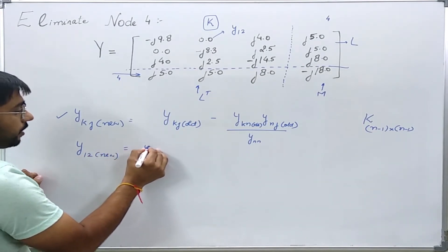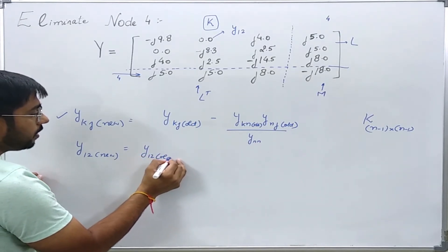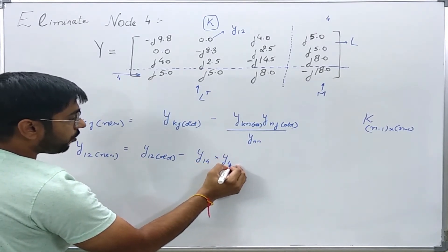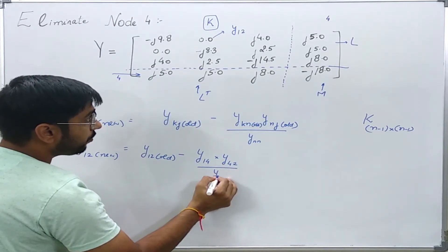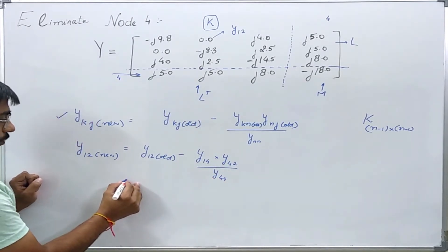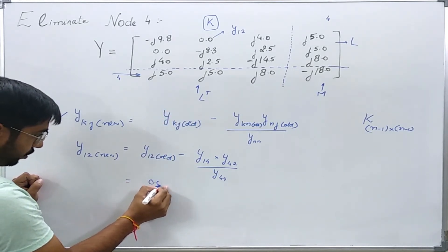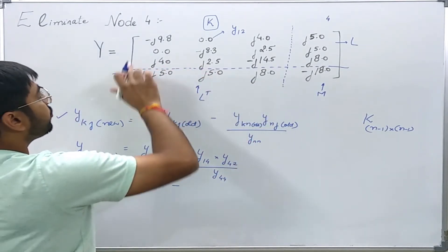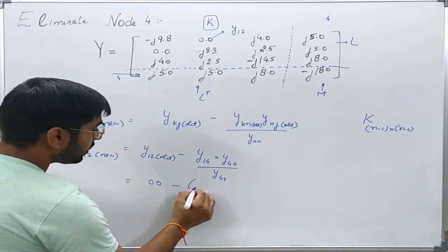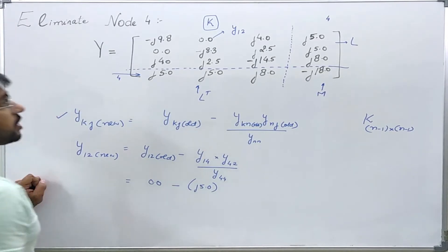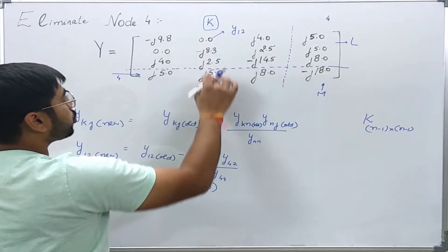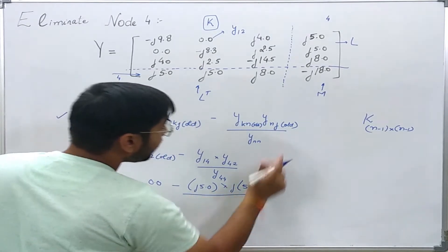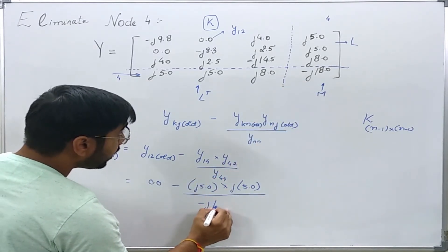What I will have: Y₁₂ old minus Y₁₄ into Y₄₂ divided by Y₄₄. Putting the values here, what I will have is 0.0 minus what is Y₁₄ here? Y₁₄ is j5.0, and what is Y₄₂? Y₄₂ is nothing but j5.0.